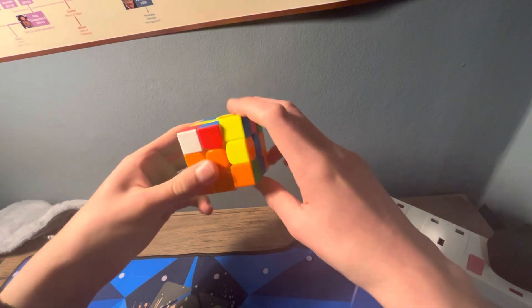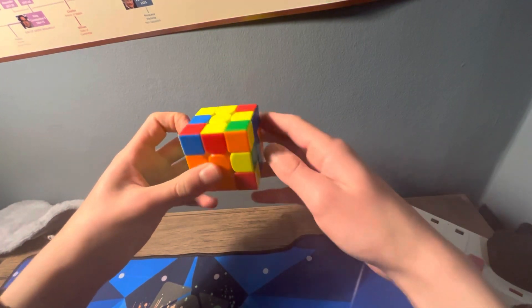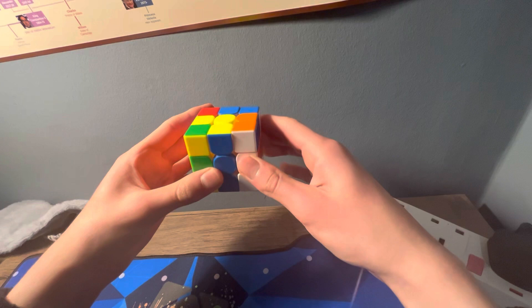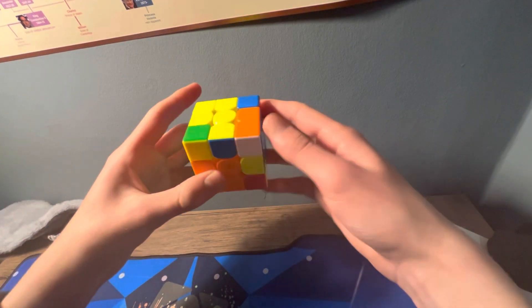So what I do here is I take out the blue red, do that, then I cube rotate to do a three move insert, and then that opens up the blue orange.